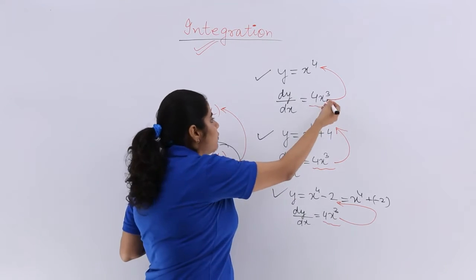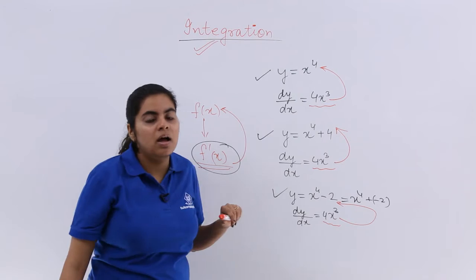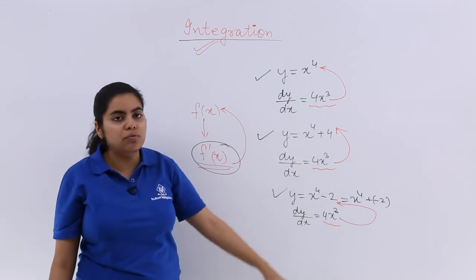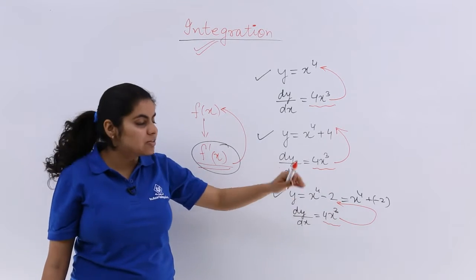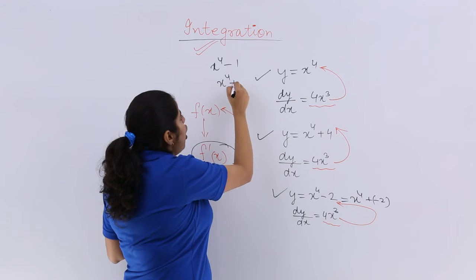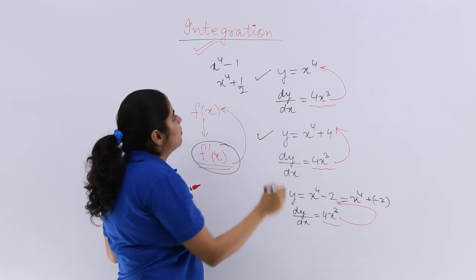The other thing, now if I have been given say 4x cube, I know that the answer could either be x raised to the power 4 or x raised to the power 4 plus 4 or x raised to the power 4 minus 2 or x raised to the power 4 minus 1 or x raised to the power 4 plus 1 by 2.